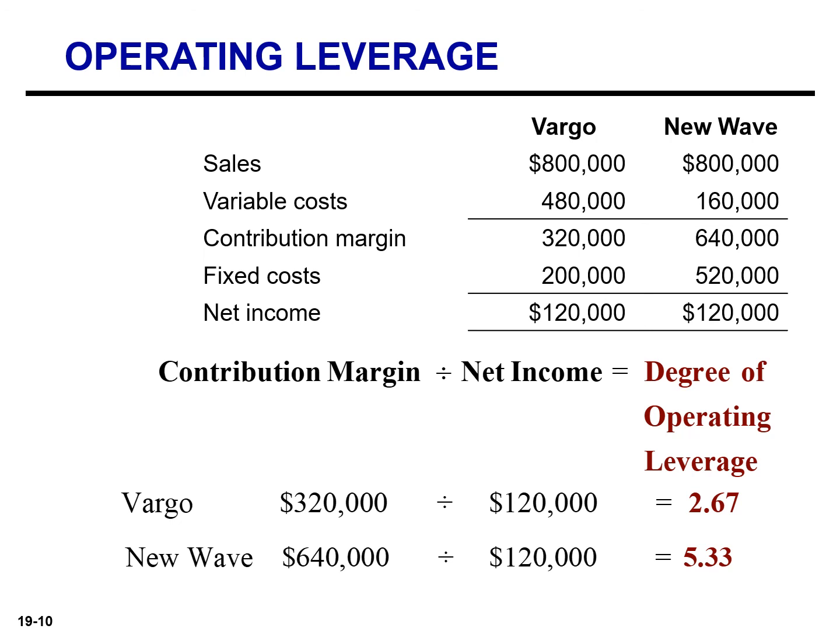If sales increase, New Wave will experience a 53.3% increase in net income, while Vargo will only enjoy a 26.7% increase. You should be careful not to conclude from this analysis that a cost structure that relies on higher fixed cost and consequently has a higher operating leverage is necessarily bad. When used carefully, operating leverage can increase a company's profitability.